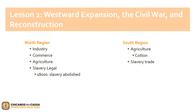The North region focused on industrialization, commerce, and agriculture, while the South region was primarily agriculture, especially the harvesting and cropping of cotton. Due to landowners' heavy dependence on slaves for agricultural production, slavery trade also increased exponentially. On the other hand, slavery was abolished in the 1800s in the North, and immigrants and women were also contributing factors to the growth of the North region.